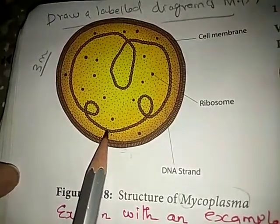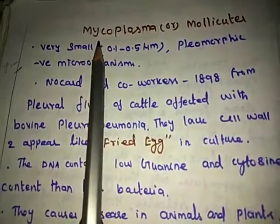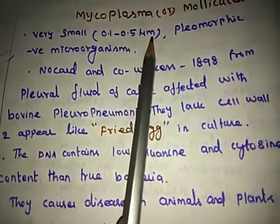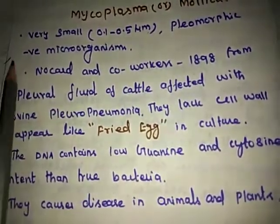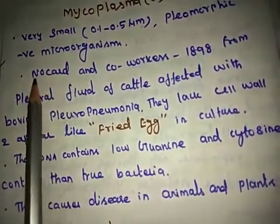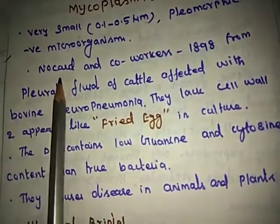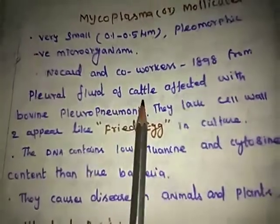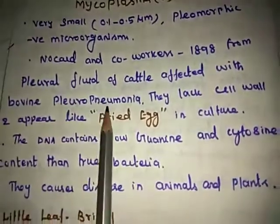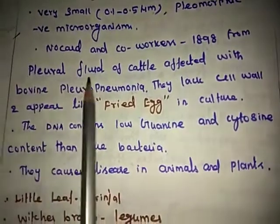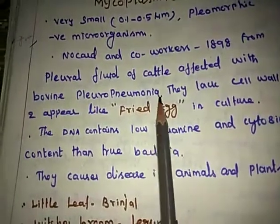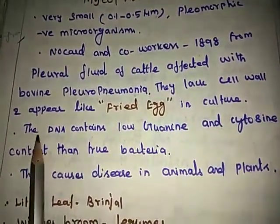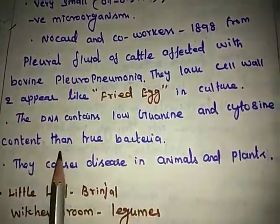Now let us see about Mycoplasma. Mycoplasma are very small, 0.1 to 0.5 micrometers, and are pleomorphic gram-negative microorganisms. They were first isolated by Nocard and coworkers in 1898 from the pleural fluid of cattle affected with ovine pleuropneumonia. They lack cell walls and appear like a fried egg in culture. Their DNA contains low guanine and cytosine content compared to true bacteria.